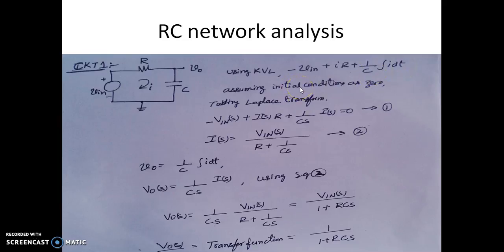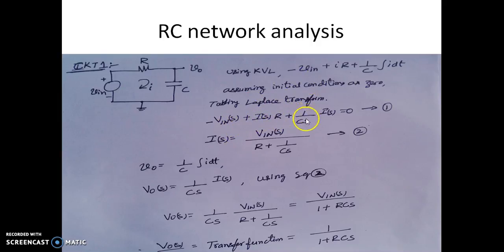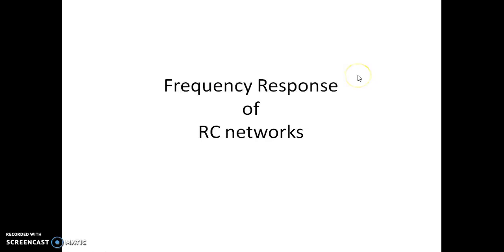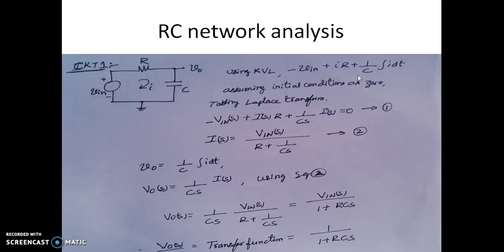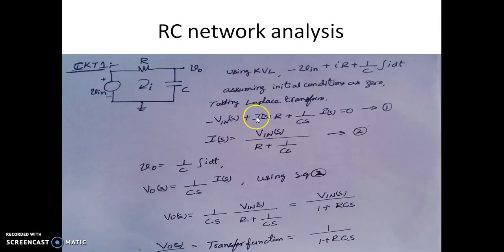Assuming the initial conditions as zero and taking the Laplace transform, VIN becomes VIN(S) and we get VIN(S) = I(S)·R + (1/CS)·I(S). So (1/C)·∫I dt becomes (1/CS)·I(S). From this expression, which we name expression 1, we can write I(S) = VIN(S) / (R + 1/CS).